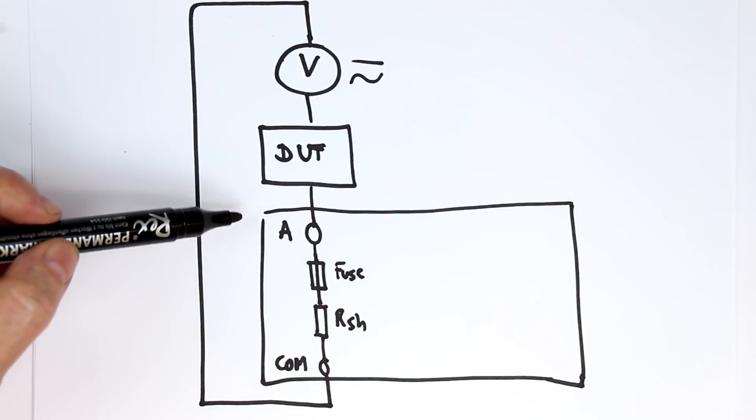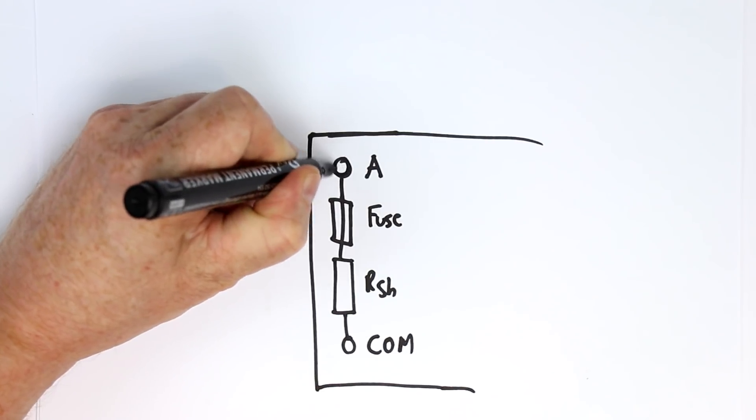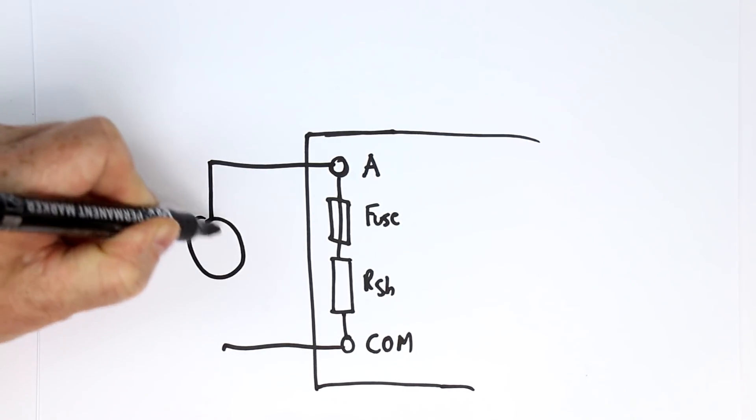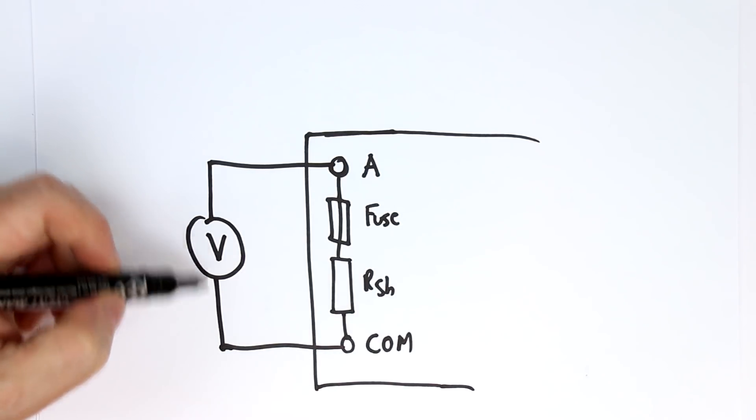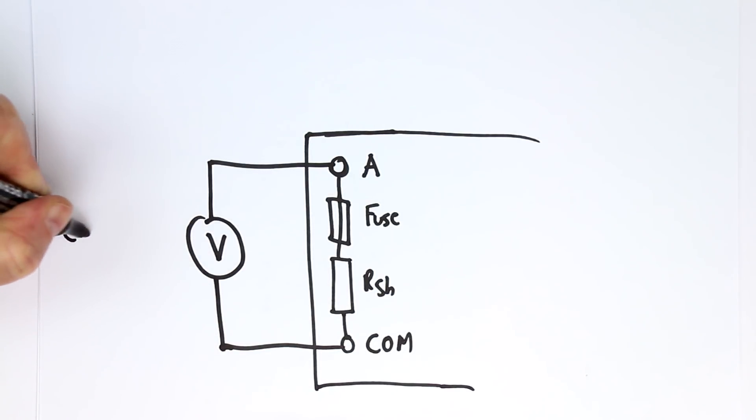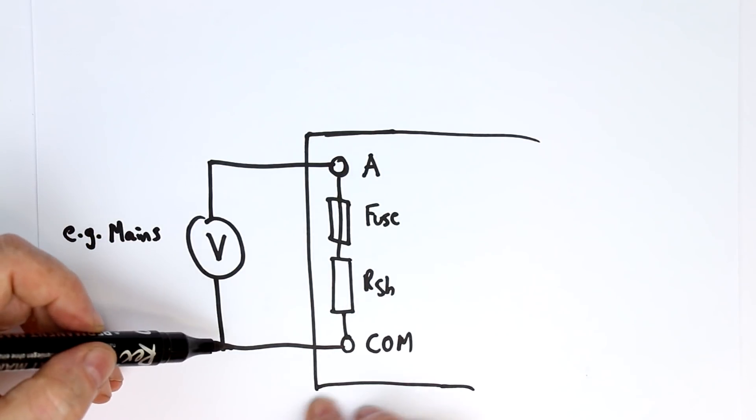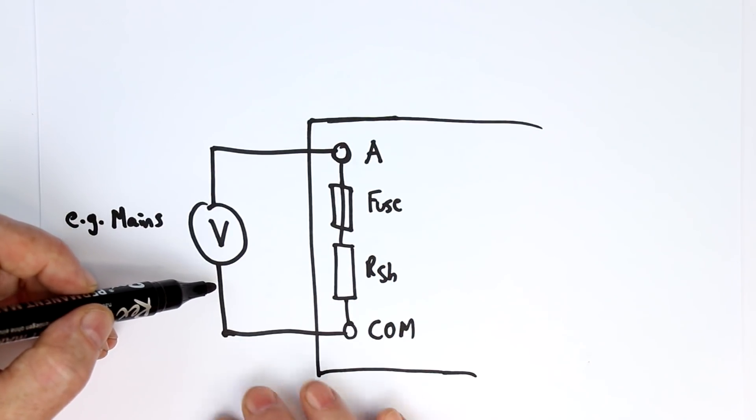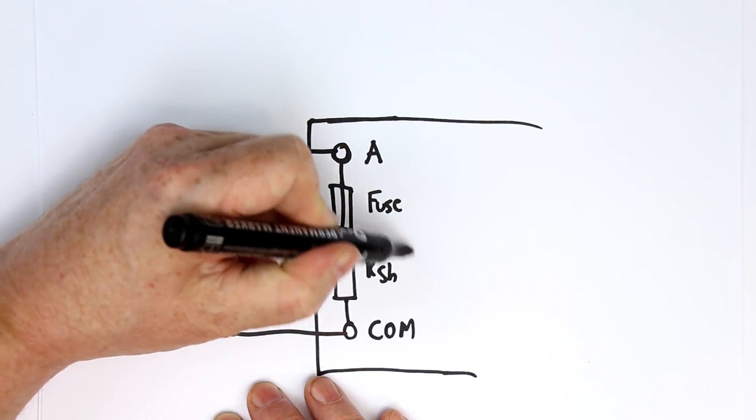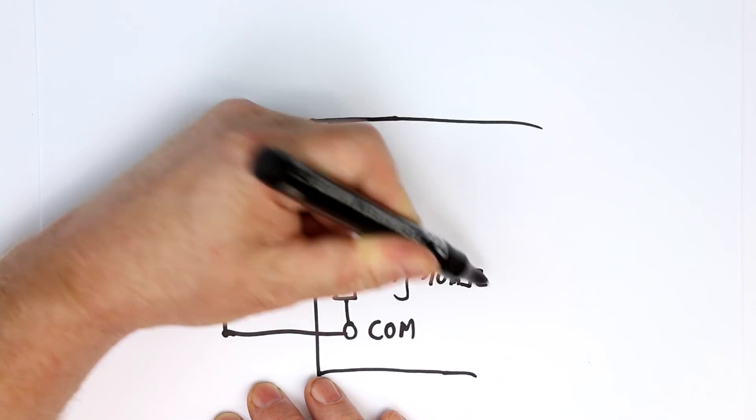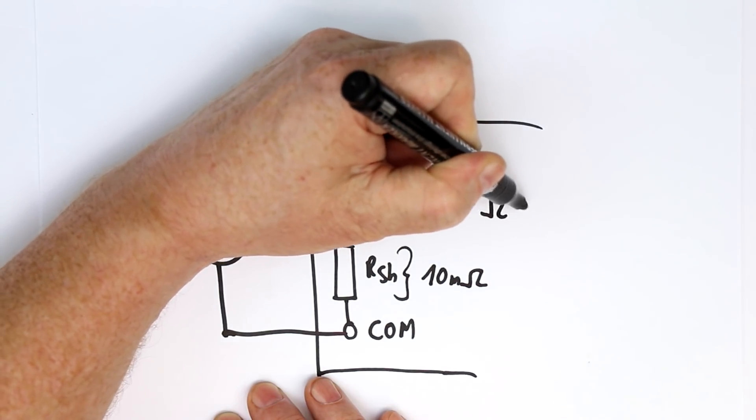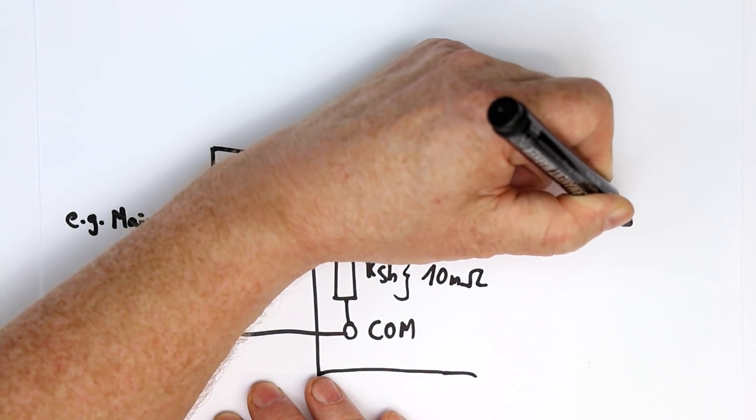But what can happen is that you accidentally have another test setup like this. We again have our multimeter inputs—the amps input, the internal fuse, the shunt resistor—but now we connect it accidentally to a low impedance voltage source without any further current limiting. This could, for example, be a mains outlet. Basically, you've just measured the voltage beforehand and accidentally turn your multimeter to the current measurement range. What will happen now? Your shunt resistor could be only, for example, 10 milliohms. Your fuse will also be in the lower ohms range, let's say 100 milliohms or 1 ohm.